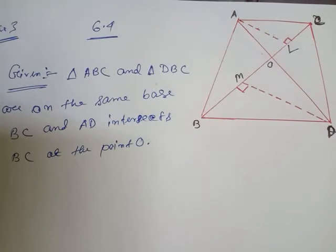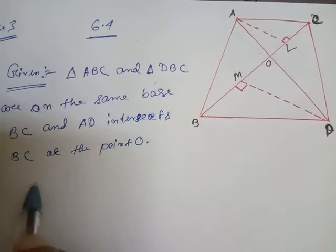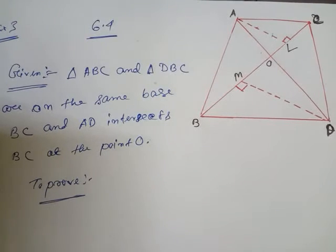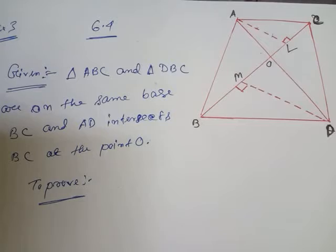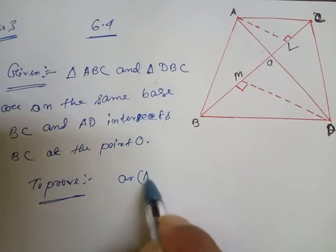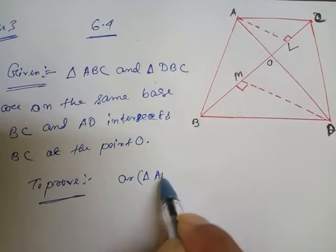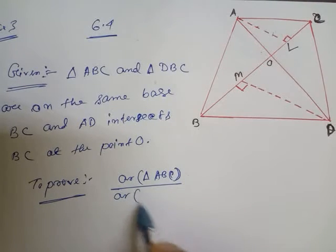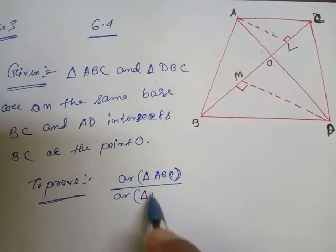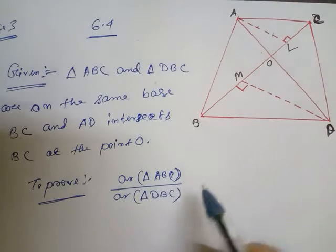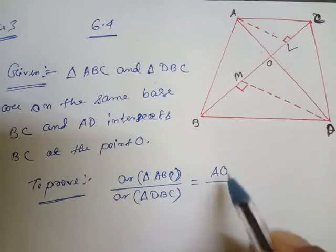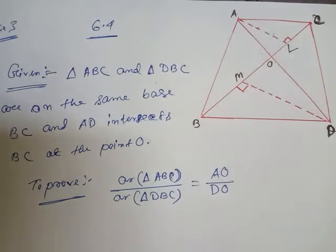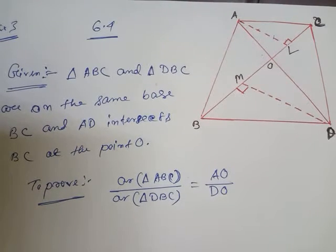To prove: Area of triangle ABC divided by area of triangle DBC equals AO divided by DO. We have to prove that one — AO by DO.